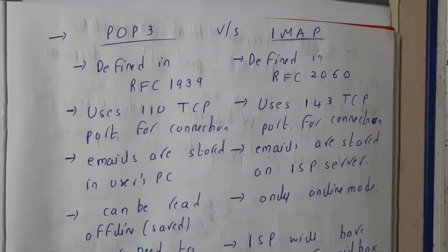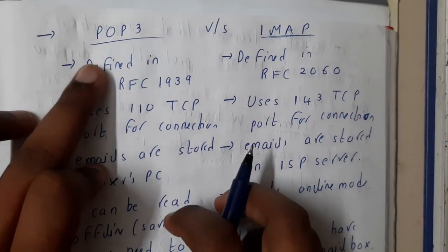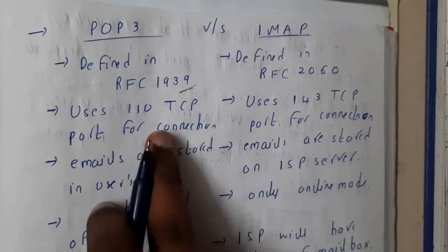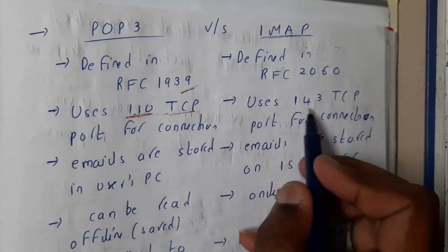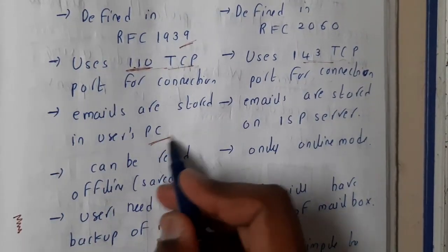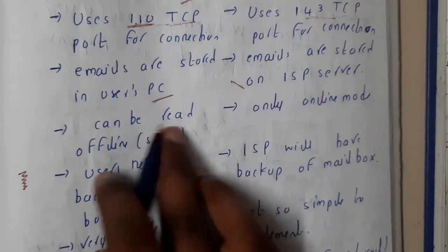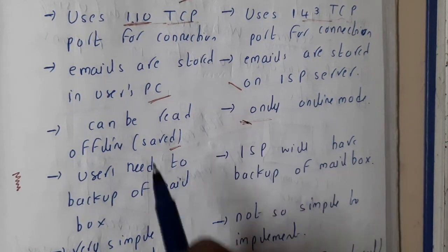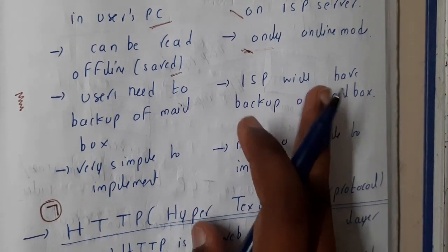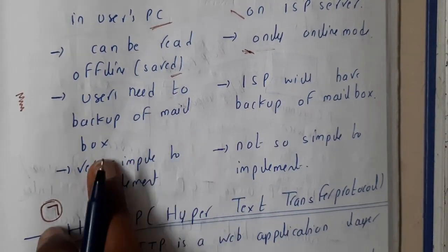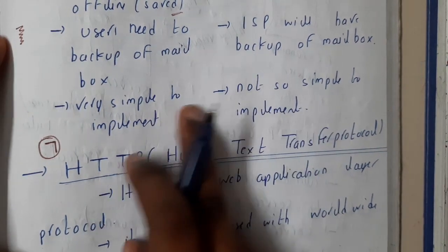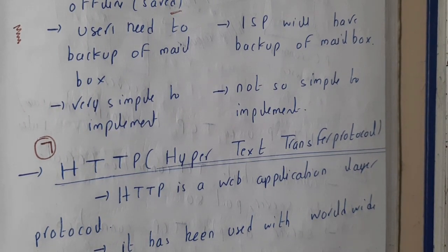Comparing POP3 and IMAP: POP3 was defined in RFC 1939 and uses TCP port 110; IMAP uses RFC 2060 and TCP port 143. Emails in POP3 are stored on the PC, while in IMAP they are stored on the ISP server. POP3 can be read in offline mode, while IMAP requires online mode since it loads partially from the server. POP3 requires user backup, while the ISP handles backup in IMAP. POP3 is simple to implement; IMAP is not.